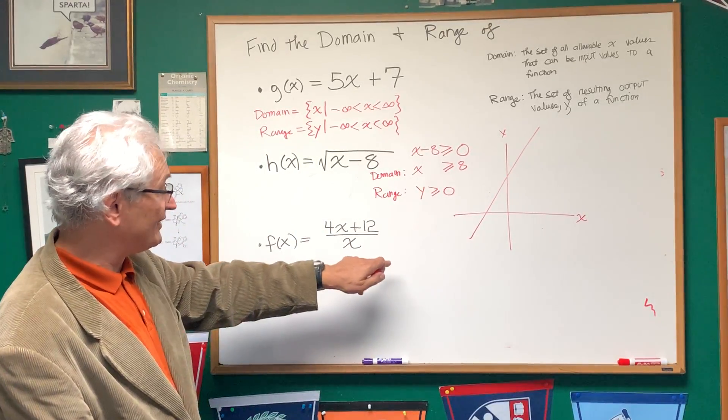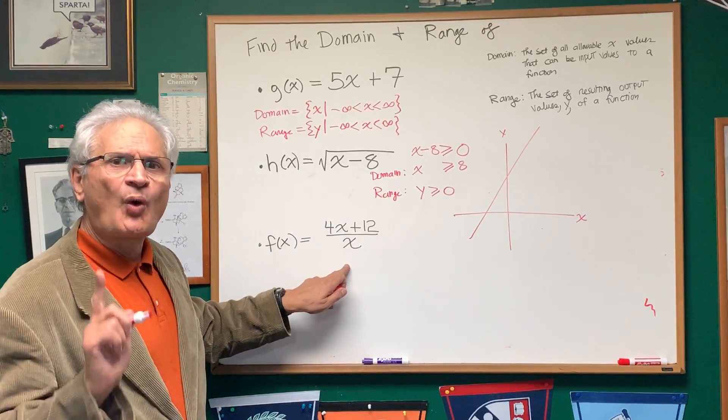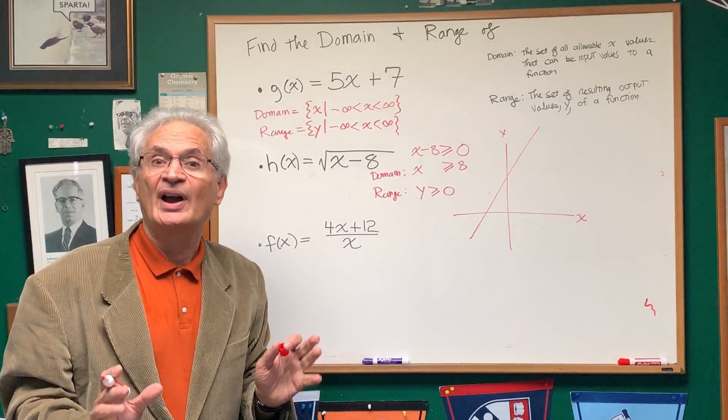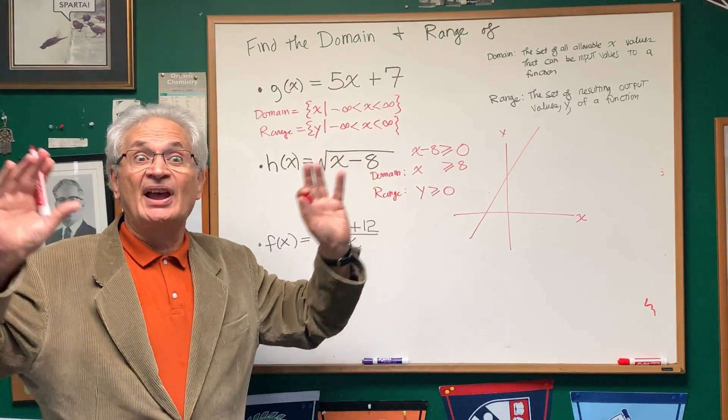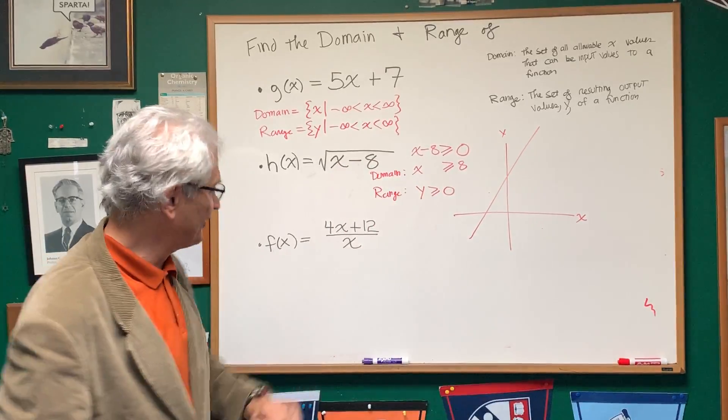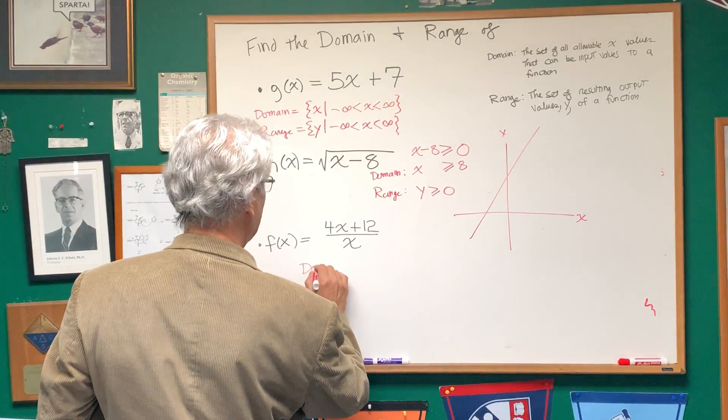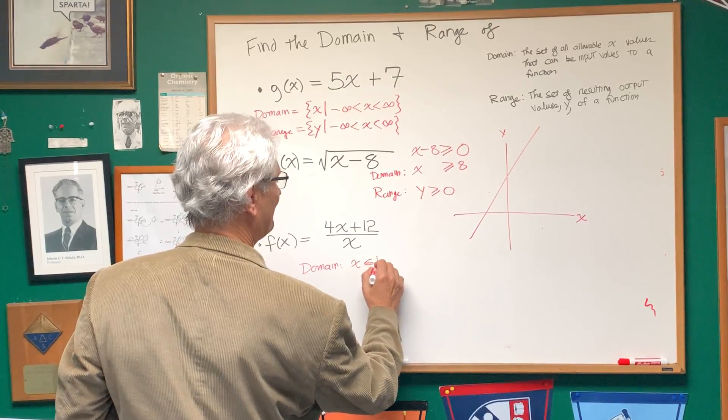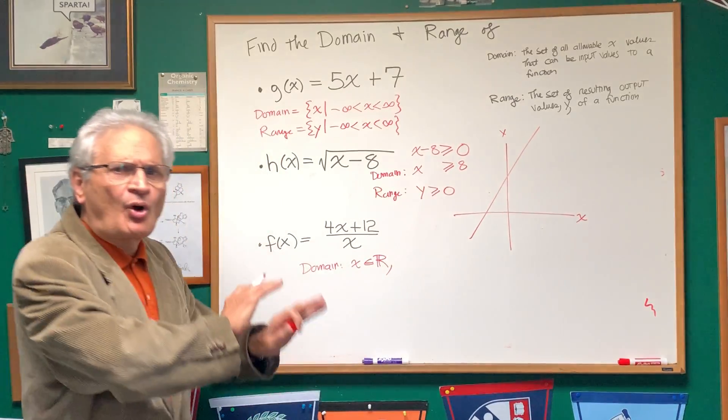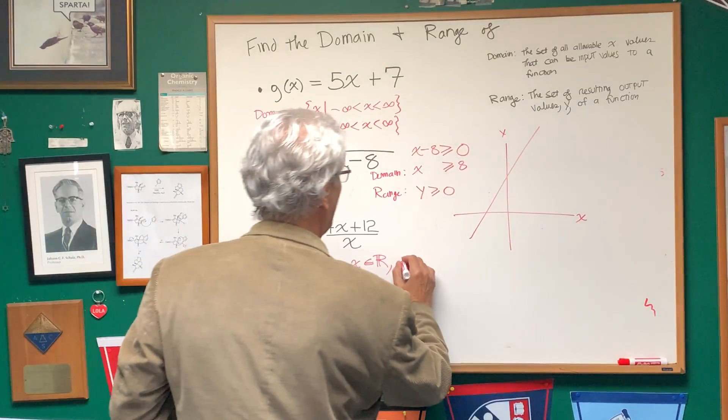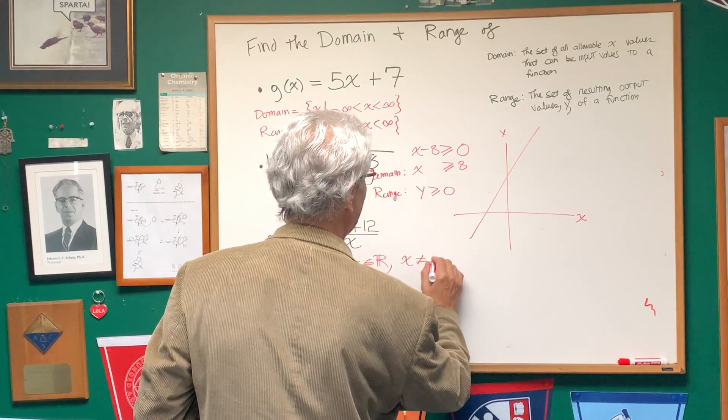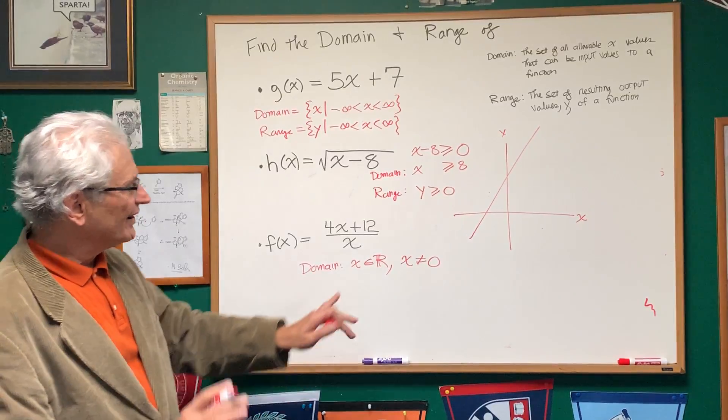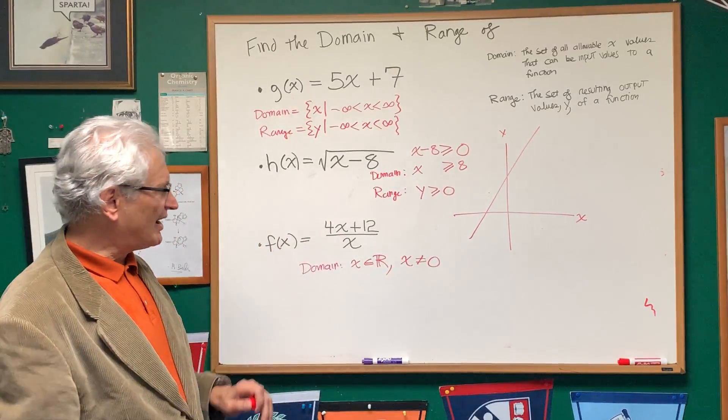But the one value that cannot be put in here is 0. I cannot have 0 in the denominator, it's just one of those mathematically forbidden rules. So the domain is going to be x is a member of all possible real numbers, except x cannot be equal to 0. That settles that, you can see it from the context.